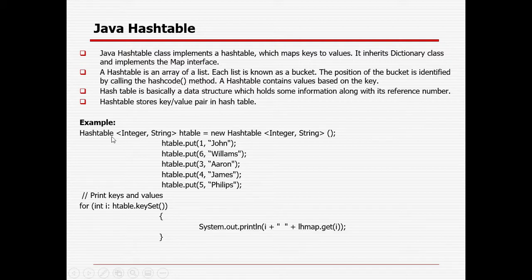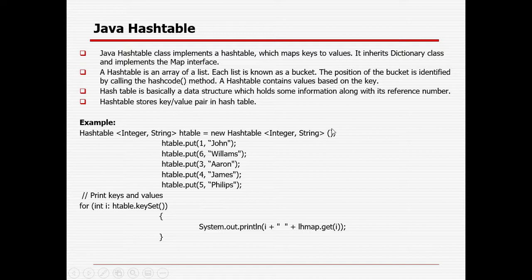In the diagram, I already showed an example. For a HashTable, you need to pass two things: one is the key and second is the value. It can be Integer-String, Integer-Integer, String-String, or String-Integer. You need to create the object or instance using new HashTable and then specify the data types for keys and values.